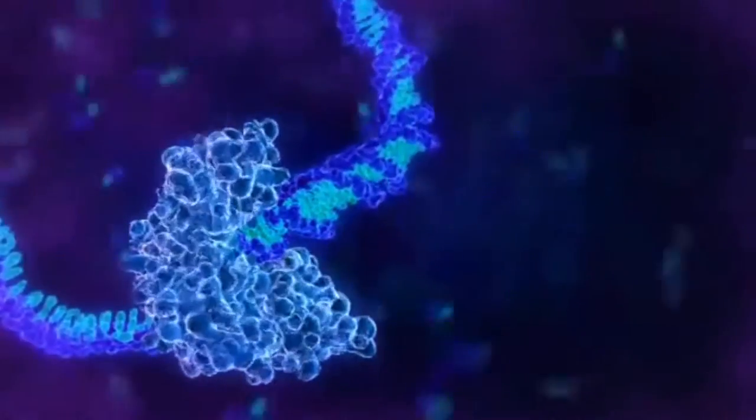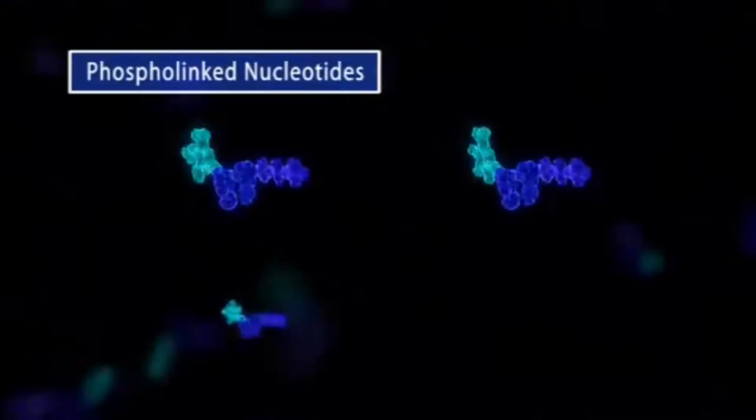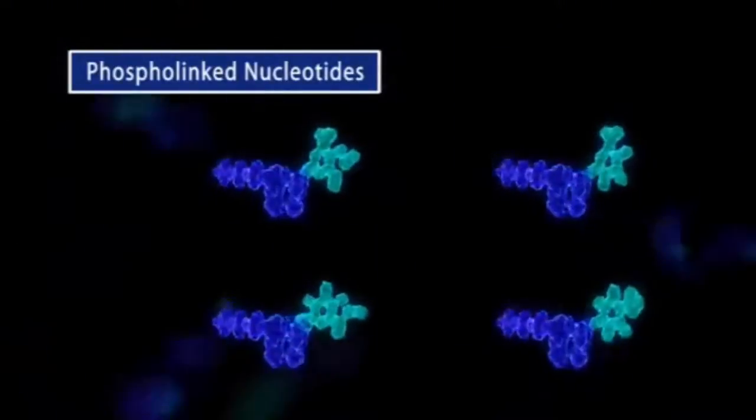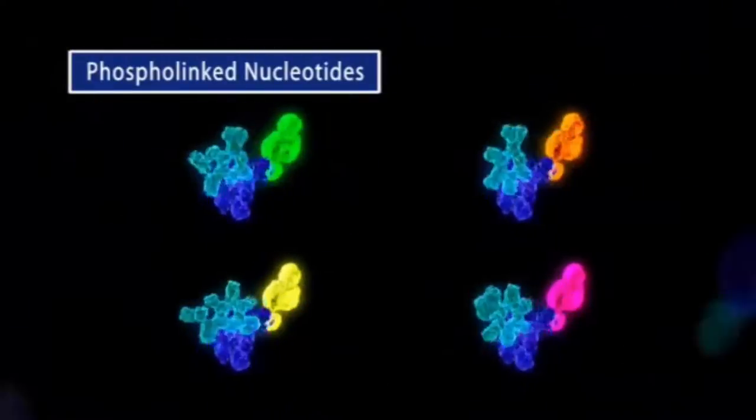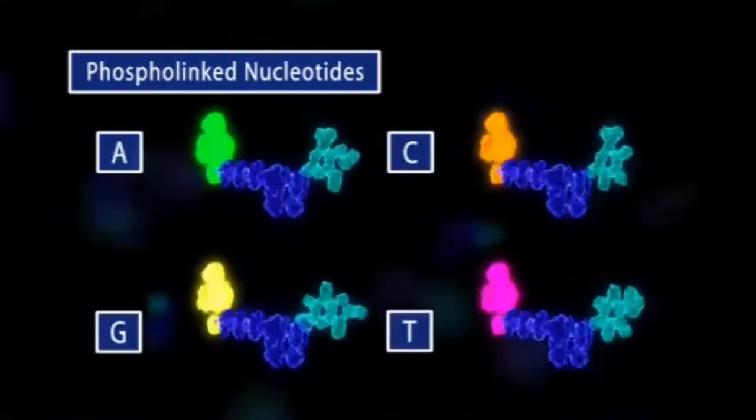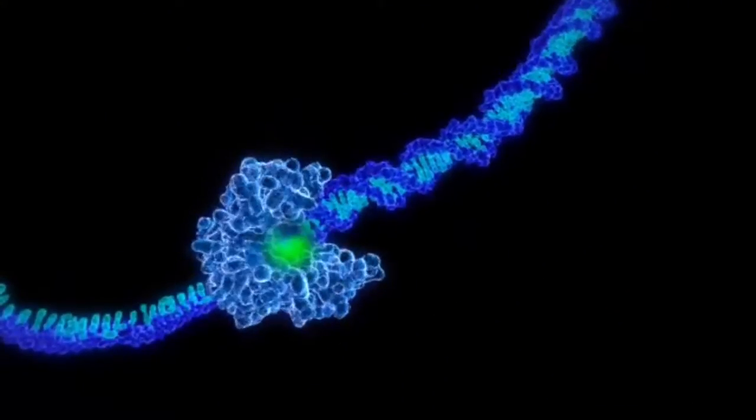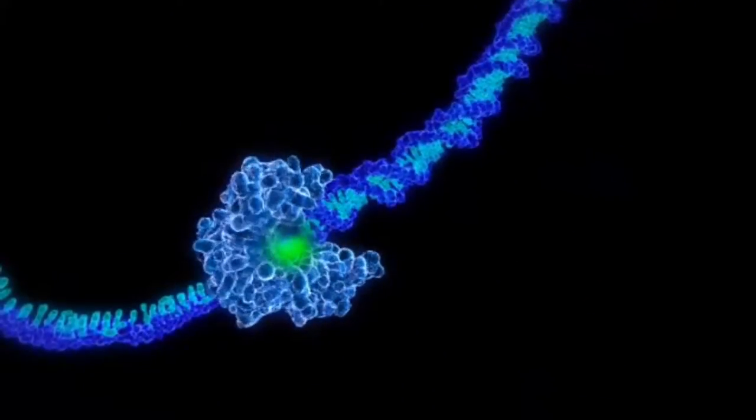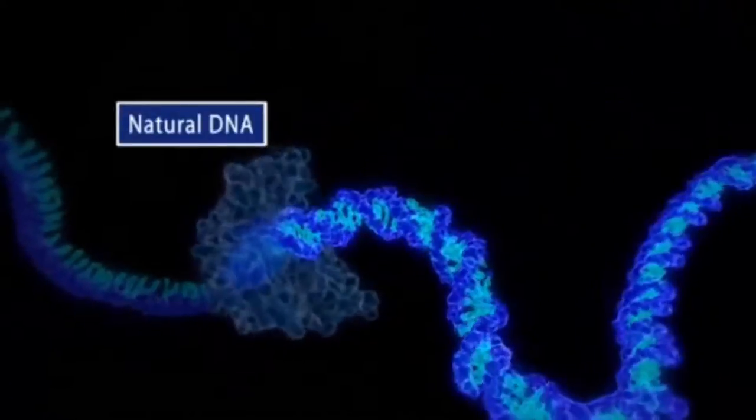Pacific Biosciences SMRT sequencing harnesses the power of the polymerase as a sequencing engine by eavesdropping on it while it works to replicate DNA. This approach is enabled by two proprietary technologies. The first is phospholinked nucleotides. To visualize polymerase activity, a different colored fluorescent label is attached to each of the four nucleotides: A, C, G, and T. In contrast to other sequencing approaches, our phospholinked nucleotides carry their fluorescent label on the terminal phosphate rather than the base. Through this innovation, the enzyme cleaves away the fluorescent label as part of the incorporation process, leaving behind a completely natural strand of DNA.